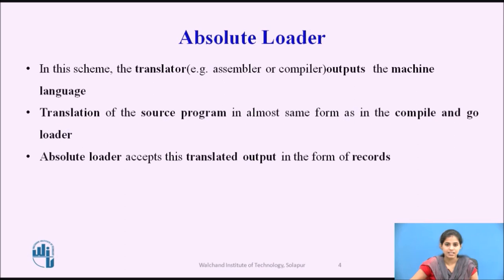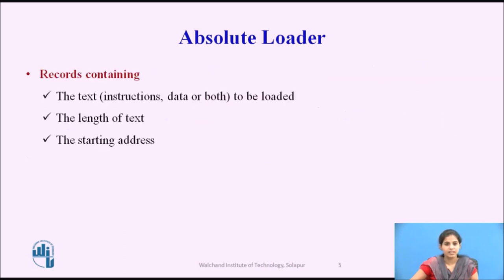In this scheme, the translator — either assembler or compiler — translates the source program and generates the machine language as output, in almost the same form as in the compile-and-go loader. The Absolute Loader accepts this translated output in the form of records. The records contain the text — either instructions, data, or both — that is to be loaded, along with the length of the text and the starting address.